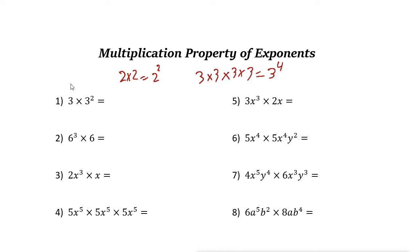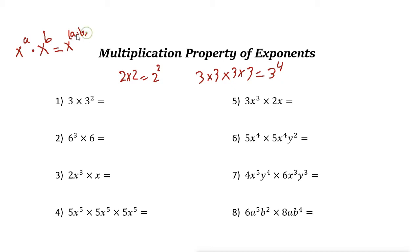Now, the exponent rule: if we have a number x to the power of a times x to the power of b — when these two bases are the same, we call this the base, and this is the power — the rule is: write the base, whatever number it is, then add the powers. So x times x gives us the base x and the power is a plus b. That is the first rule that we use.